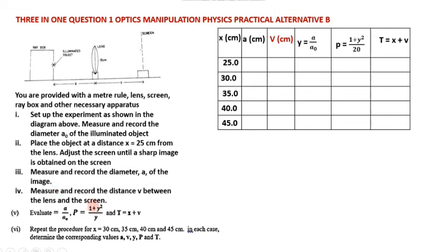Measure and record the distance V between the lens and the screen. Evaluate: Y equals A over A₀; P equals (1 plus Y²) over Y; and T is equal to X plus V. Repeat the procedure for X equal to 30, 35, 40, and 45 cm. In each case evaluate A, V, Y, P, and T.